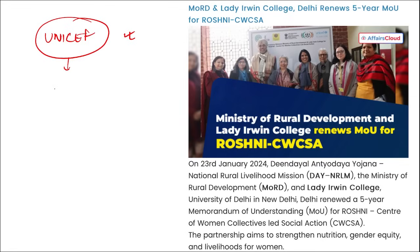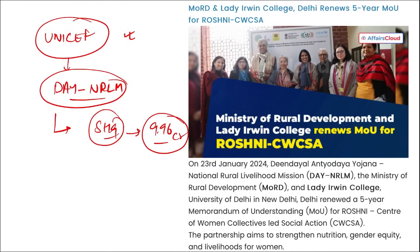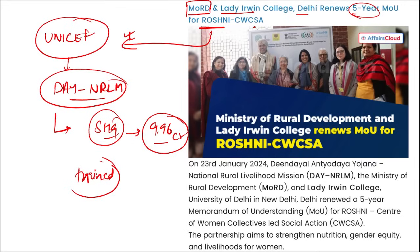Roshni is helping DAY-NRLM so that people living in poverty can come out of poverty. They are helping various self-help groups, under which 9.96 crore individuals were benefited. Multiple individuals will be trained to become skill-ready and job-ready. The Ministry of Rural Development and Lady Erwin College of Delhi renewed their MOU for 5 years for this Roshni CWCSA scheme, financially supported by UNICEF.